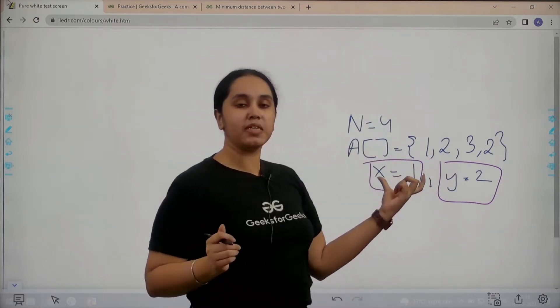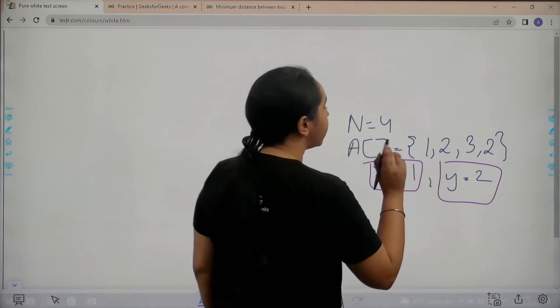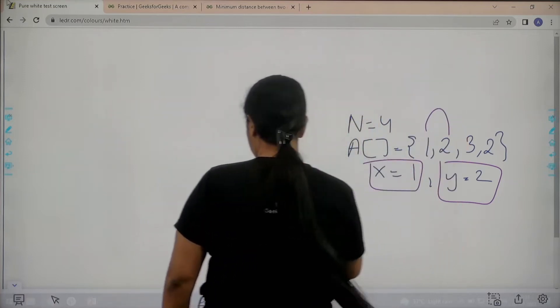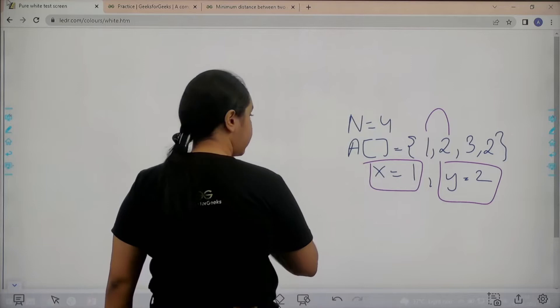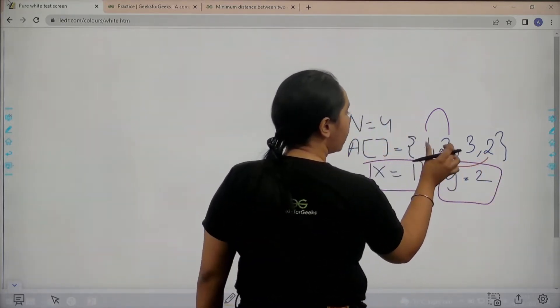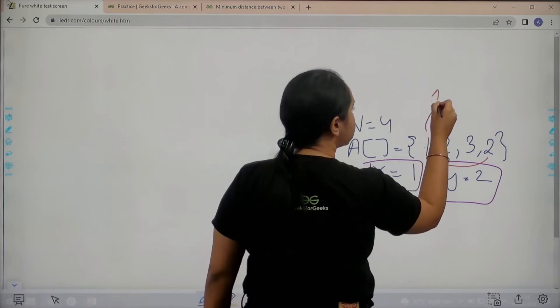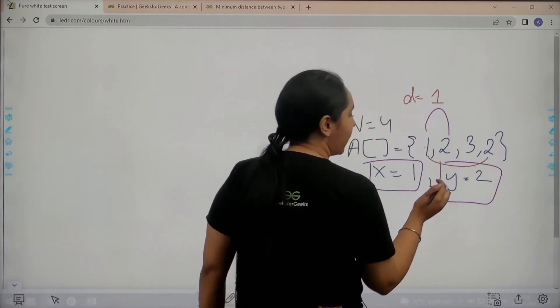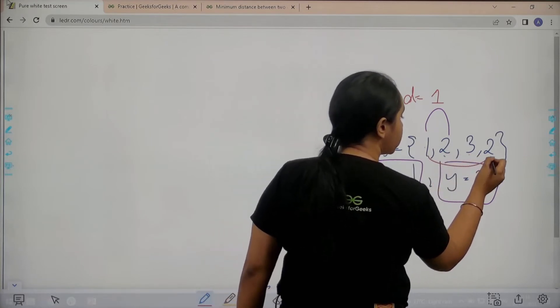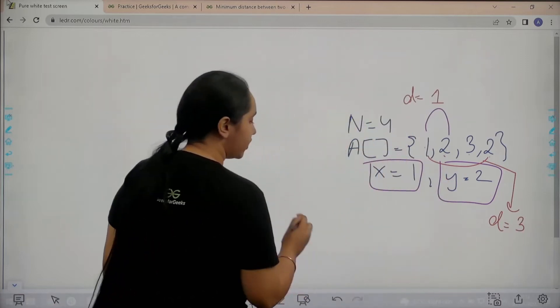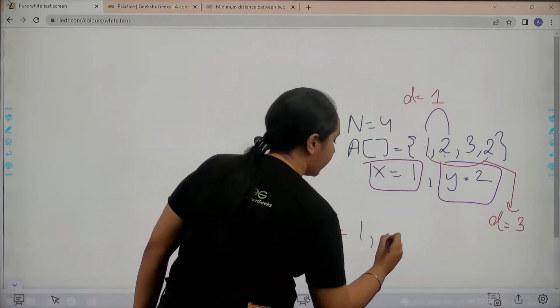Now see, this is the first distance and this is the second distance. See, 1 and 2 are just beside each other so the distance here is 1, while over here it is 1, 2, 3, so the distance here is 3. Now I have two distance values that are 1 and 3.